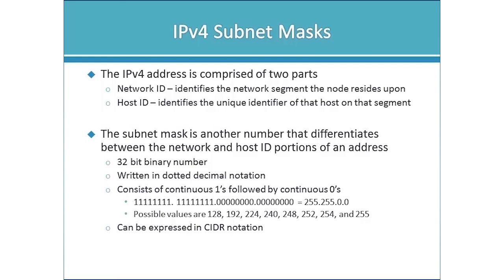Subnet masks can be expressed in dotted decimal notation or in CIDR notation. CIDR — Classless Interdomain Routing — specifies the number of bits in the subnet mask set to one. So an address listed as 192.168.1.100/24 means 24 out of 32 bits in the mask are set to one. It's a simpler way of writing out the subnet mask.